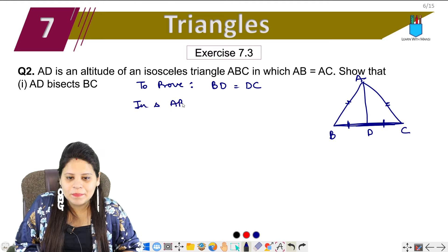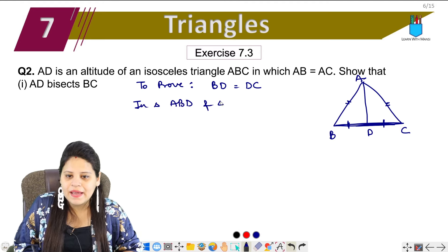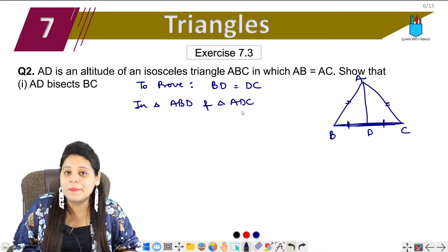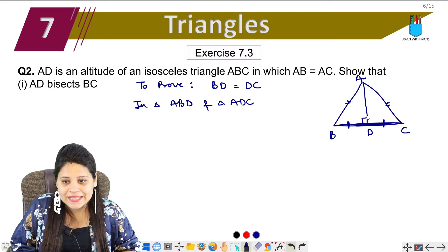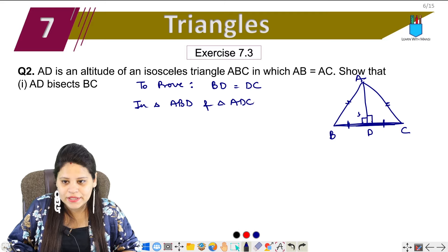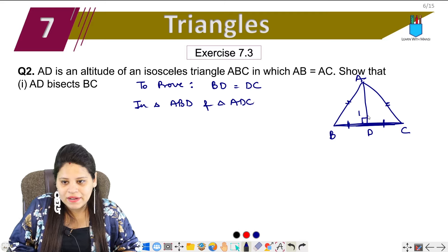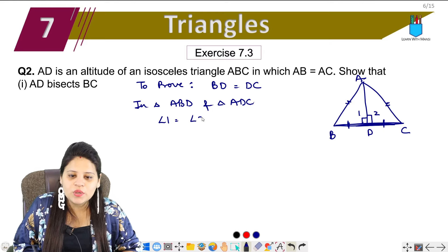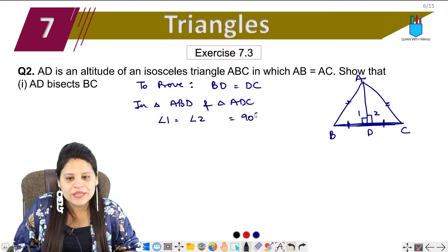In triangle ABD and triangle ADC, in both triangles, let's see what we have to do here. This is altitude. This is both angles, angle 1 or 2. I have to tell it. Angle 1 and this is called angle 2. So angle 1 equals angle 2 because both are 90 degrees.